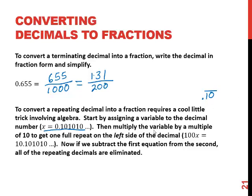Then we're going to multiply the variable by a multiple of 10 in order to get one full repeat on the left side of the decimal. So since I've got two digits repeating, I'm going to be multiplying this by 100. In other words, to move the decimal over two places.